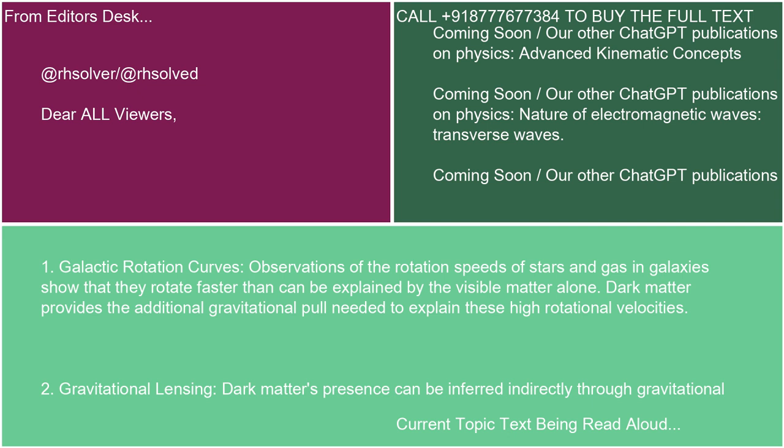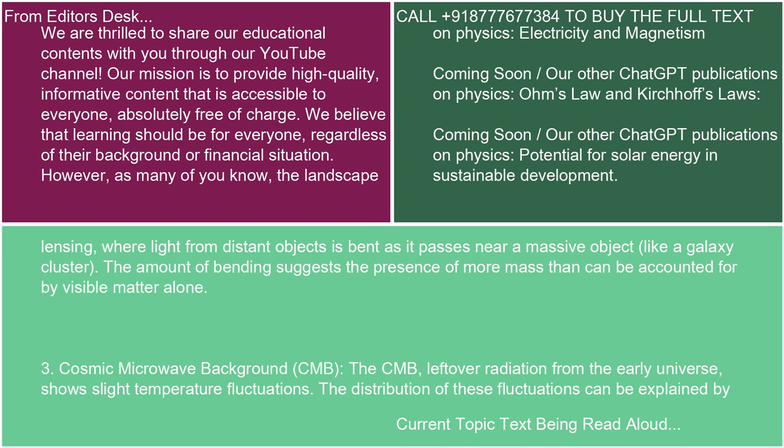Two: gravitational lensing. Dark matter's presence can be inferred indirectly through gravitational lensing, where light from distant objects is bent as it passes near a massive object, like a galaxy cluster. The amount of bending suggests the presence of more mass than can be accounted for by visible matter alone.